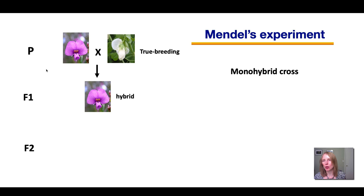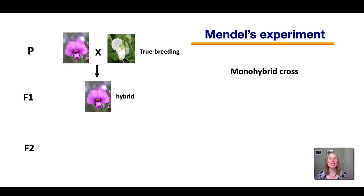Here's some terminology we need to discuss for genetic crosses. The first generation — the initial parents — are called the P generation, P for parents. Their children are referred to as F1, short for filial one. And then the grandchildren will be referred to as F2, which stands for filial two. So in this case, the P generation were two different true breeding parents, and the F1s were the offspring.